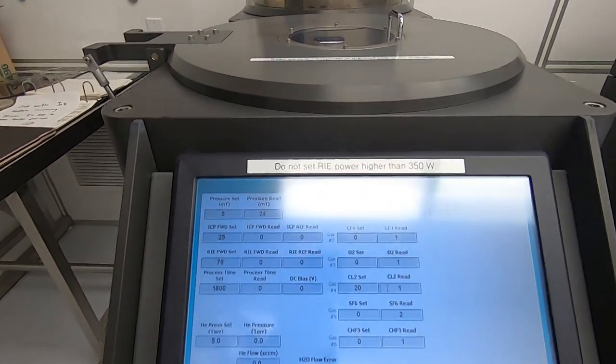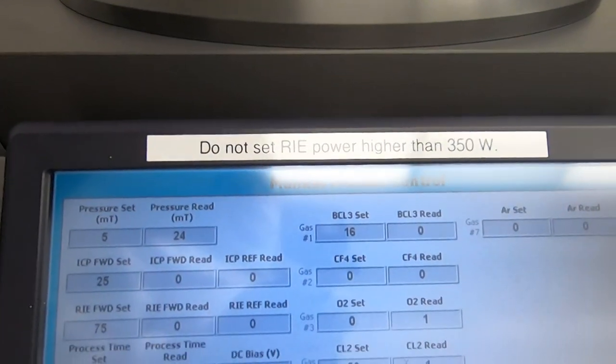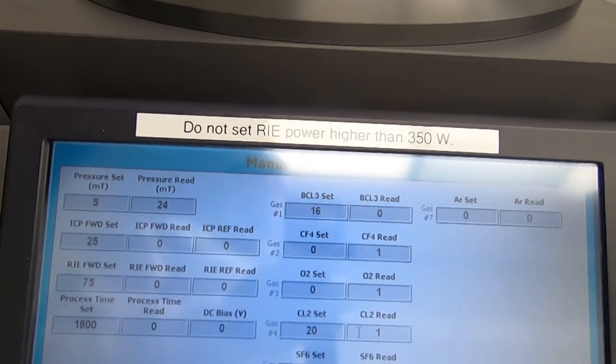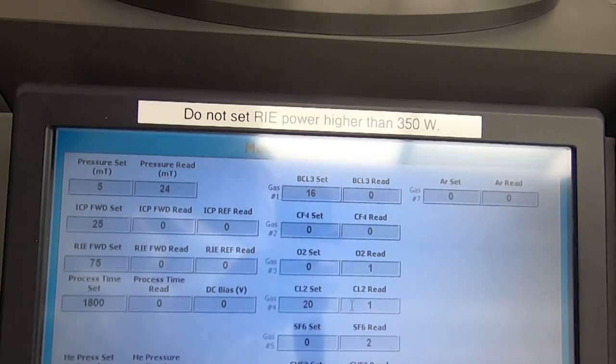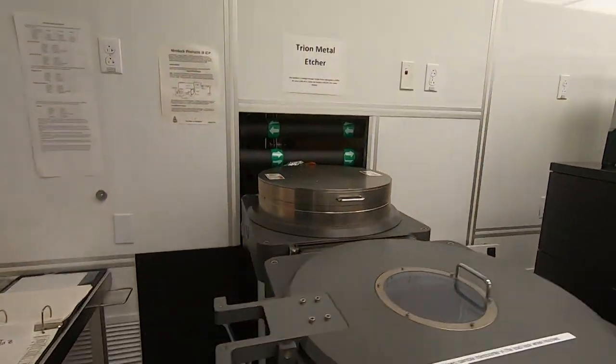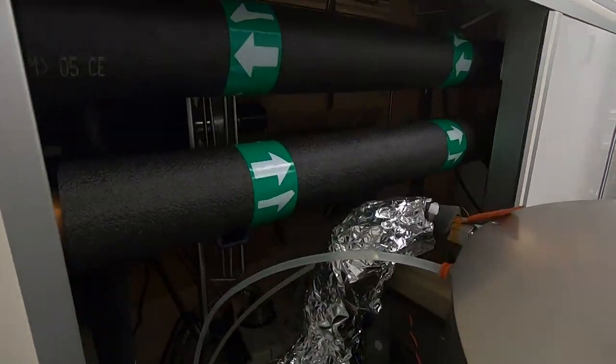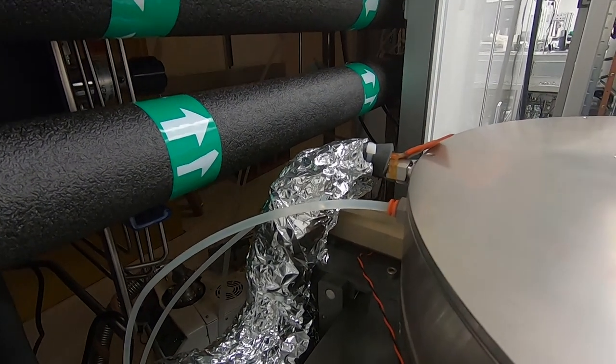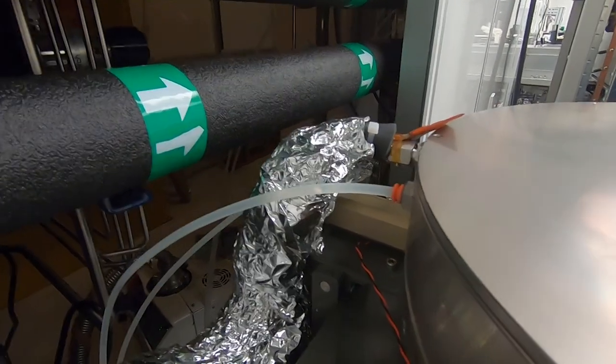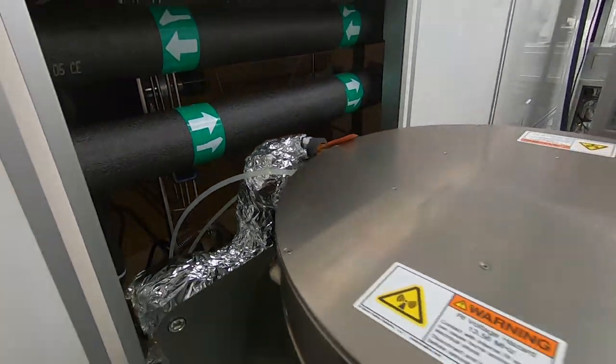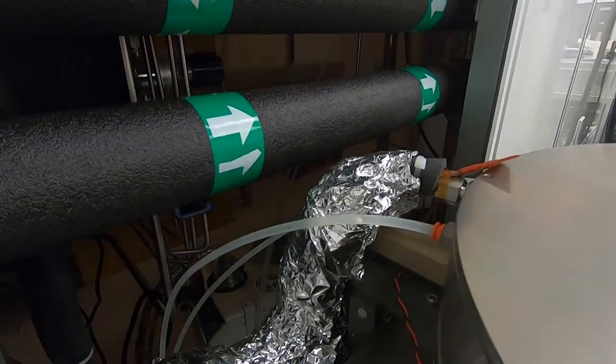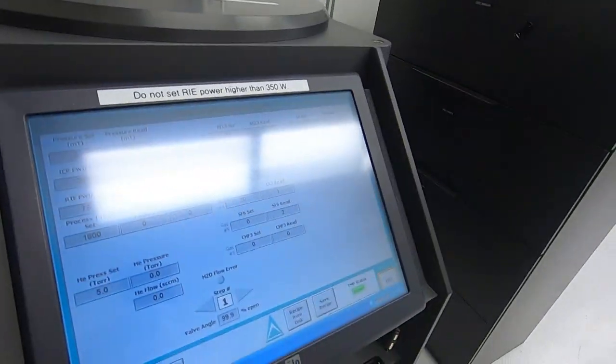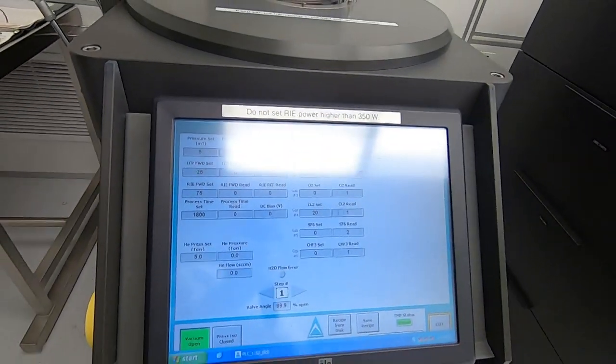Anyway, boron trichloride condenses at room temperature and elevated pressure. So for years what we did was heat all the lines, all the boron trichloride lines and the process gas lines with these crappy heaters that we have to replace every year or so.